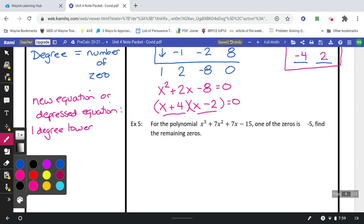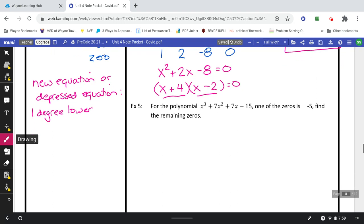Example number 5. For the polynomial x to the third plus 7x squared plus 7x minus 15, one of the zeros is negative 5. Find the remaining zeros. Once again, I want to point out that in delta math, delta math will give you the answer like this. It'll say f of negative 5 equals 0. That just means that negative 5 is the number that you want to use on the outside of your synthetic division. Line up the coefficients 1, 7, 7, and negative 15.